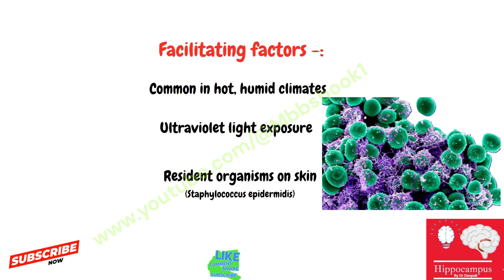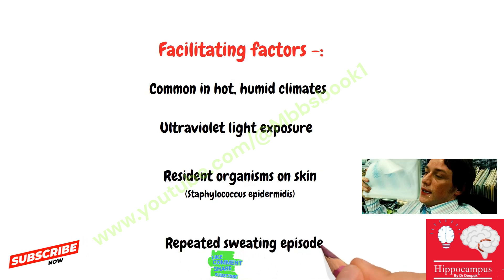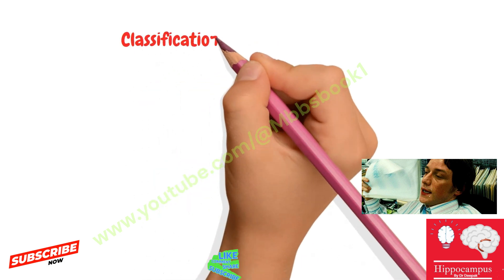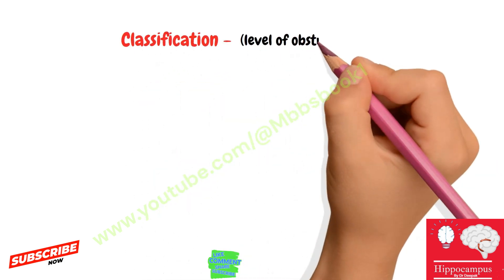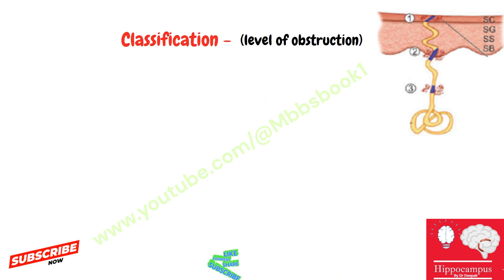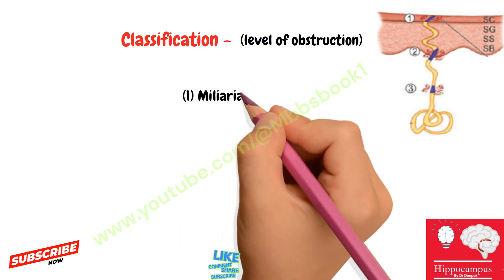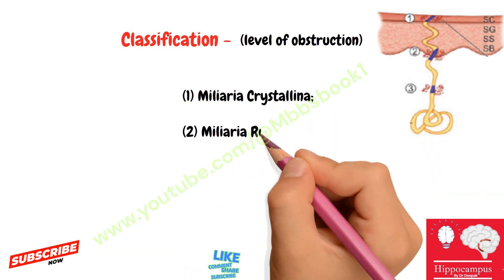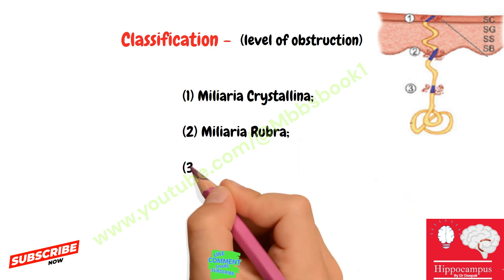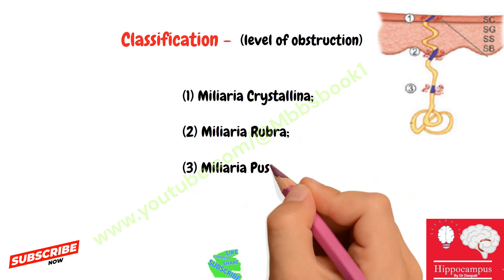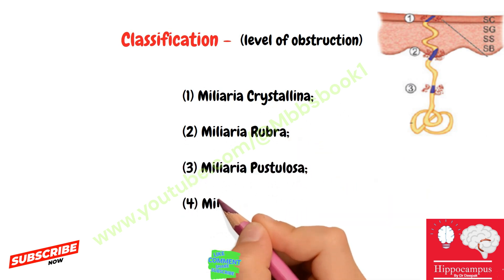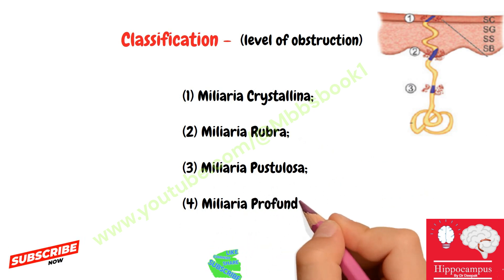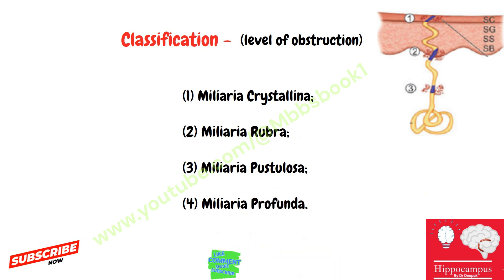Fourth is repeated sweating episodes. Based on the level of obstruction, we classify miliaria into four different groups: first is miliaria crystallina, second is miliaria rubra, third is miliaria pustulosa, and fourth is miliaria profunda. Now let's discuss them one by one.